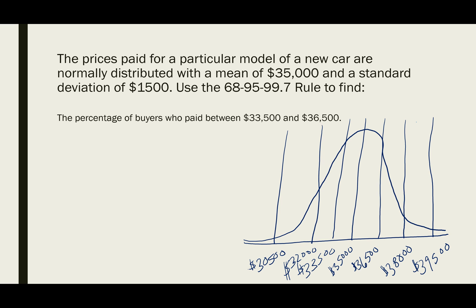Now we need to look at what we're looking for — buyers who paid between $33,500 and $36,500. I'll highlight the mean and the two values on the chart. We can see the green lines are at minus 1 and plus 1 standard deviation from the mean. Our 68-95-99.7 rule tells us that within plus or minus 1 standard deviation we have 68% of the data, within ±2 we have 95%, and within ±3 we have 99.7%. So we're within plus or minus 1 standard deviation, which is 68% of the data.